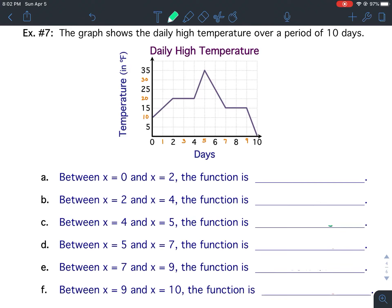Describing functional relationships from graphs, Less Than 16 Notes, Example Number 7. The graph shows the daily high temperature over a period of 10 days.